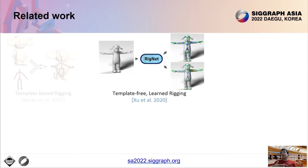RigNet proposed a template-free learning-based solution to skeleton prediction and skinning for input 3D models. However, it processes exclusively the input 3D geometry without taking into account any motion cues. As a result, its output skeletons may not necessarily capture underlying articulating parts.